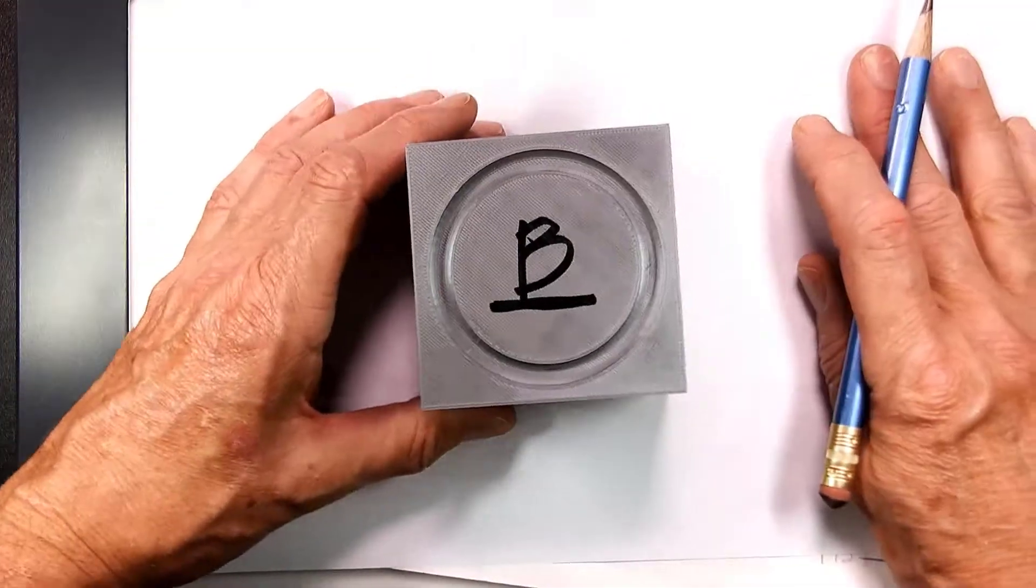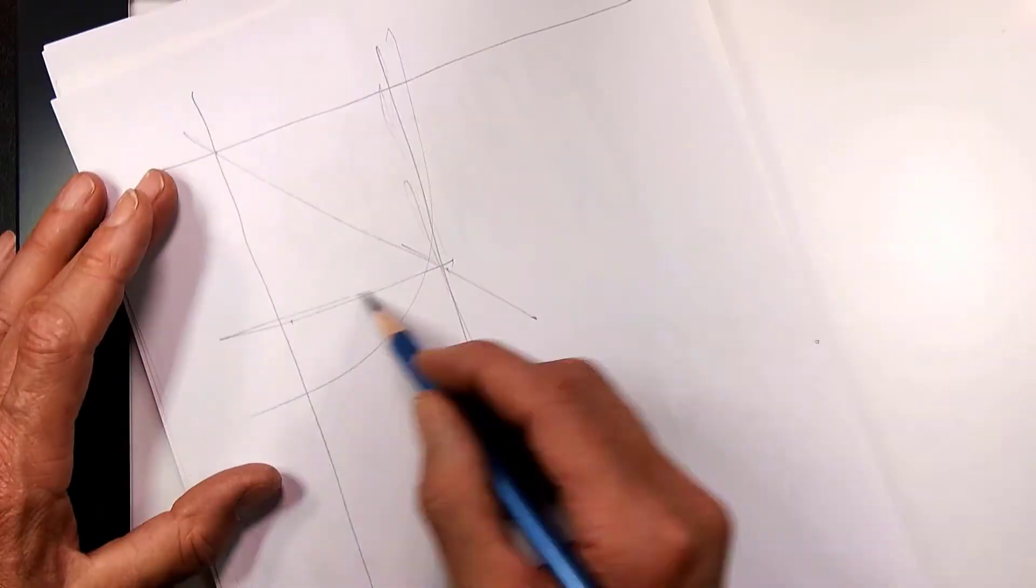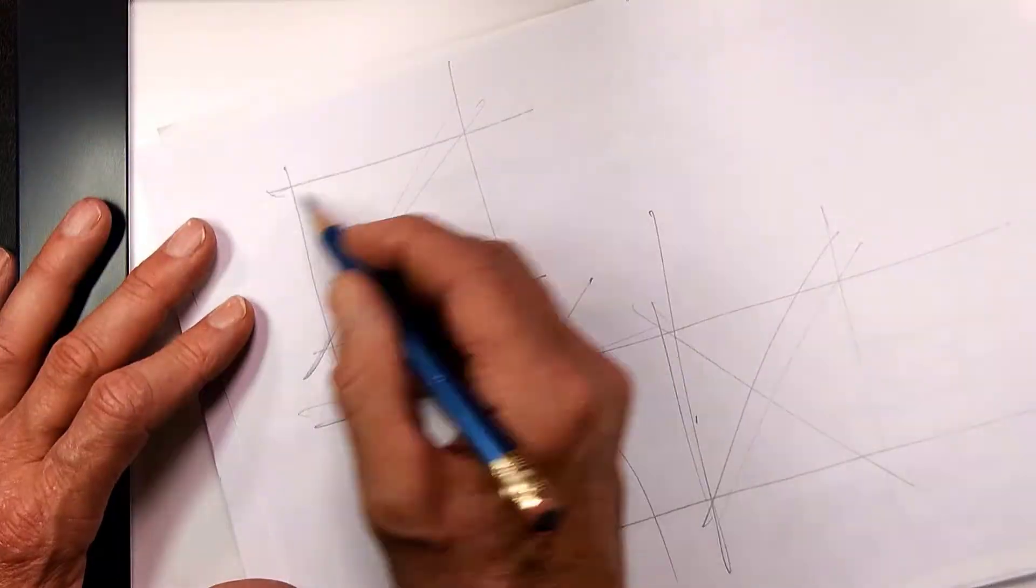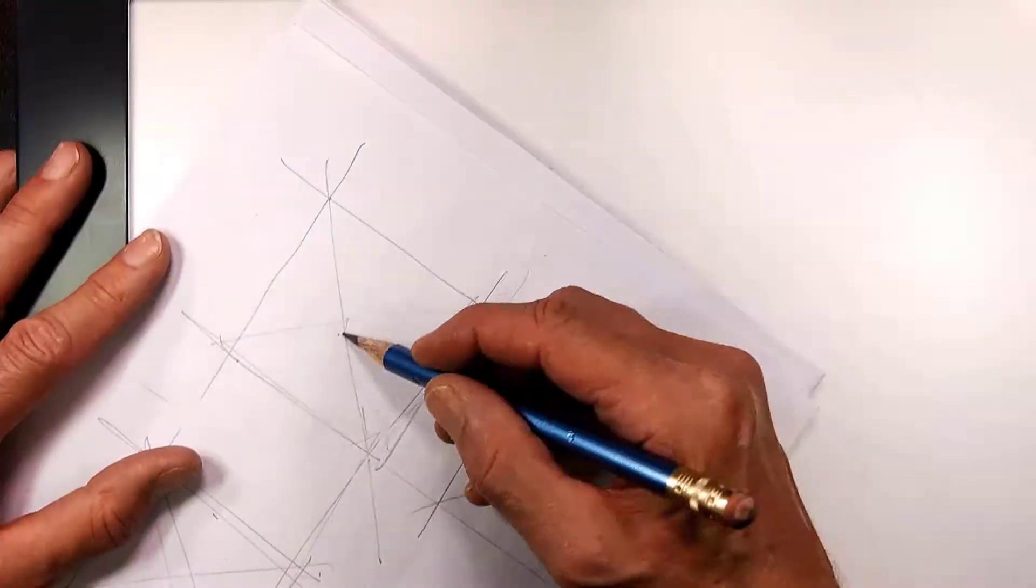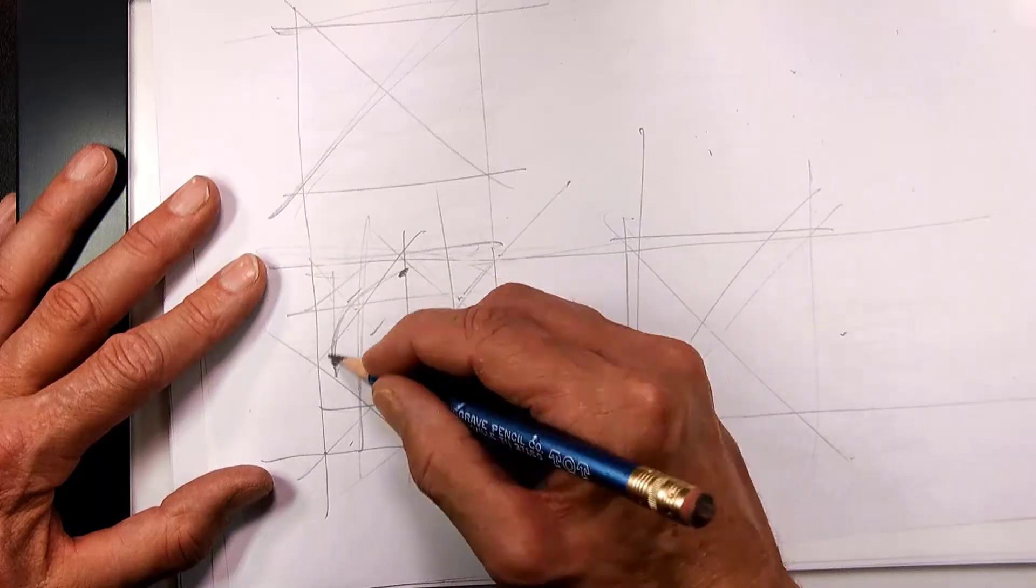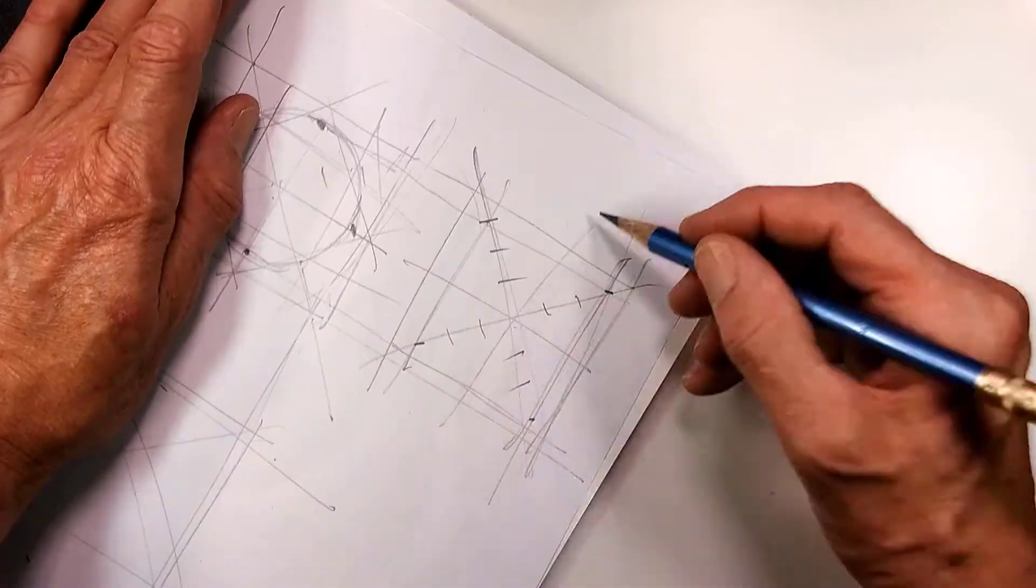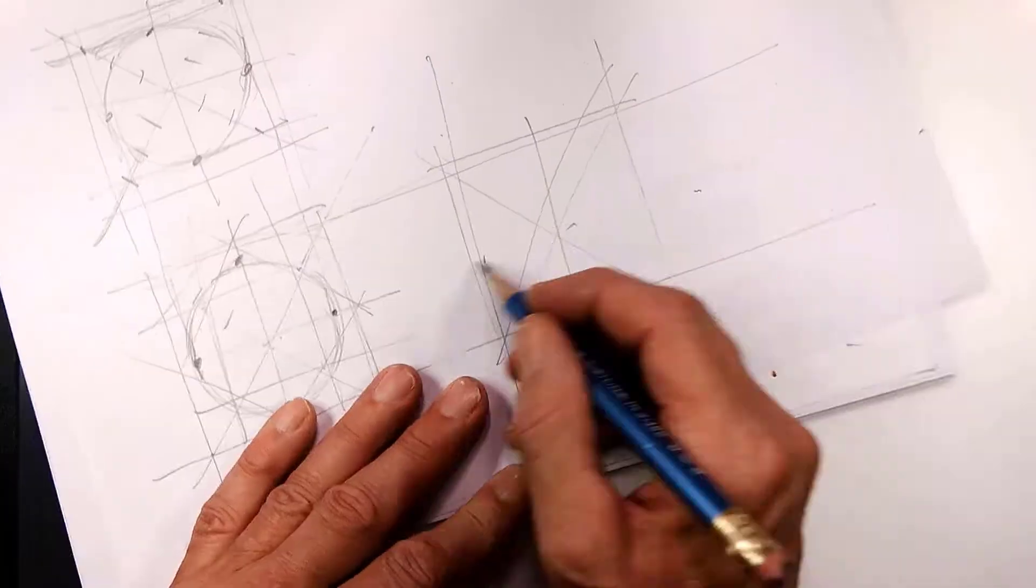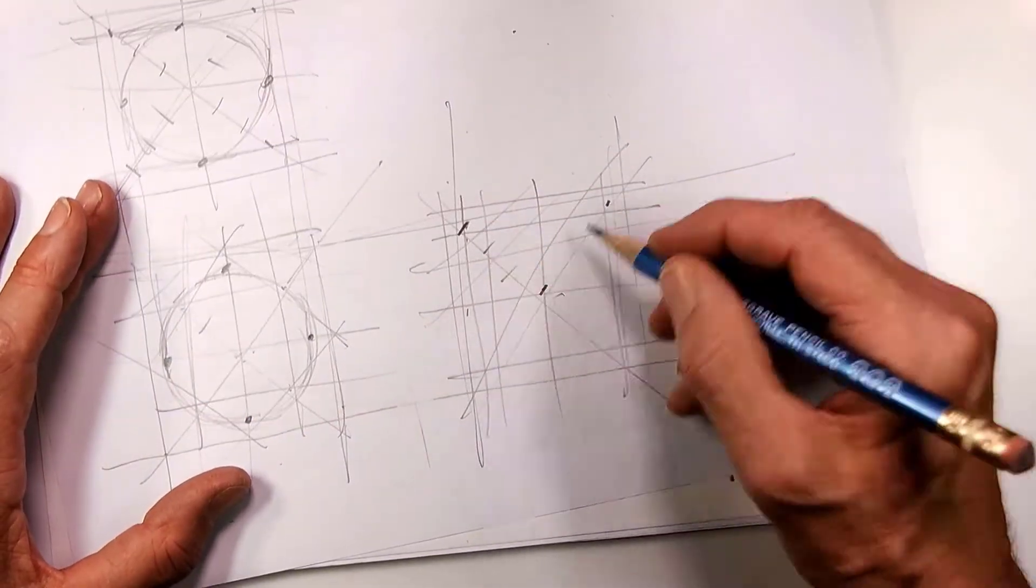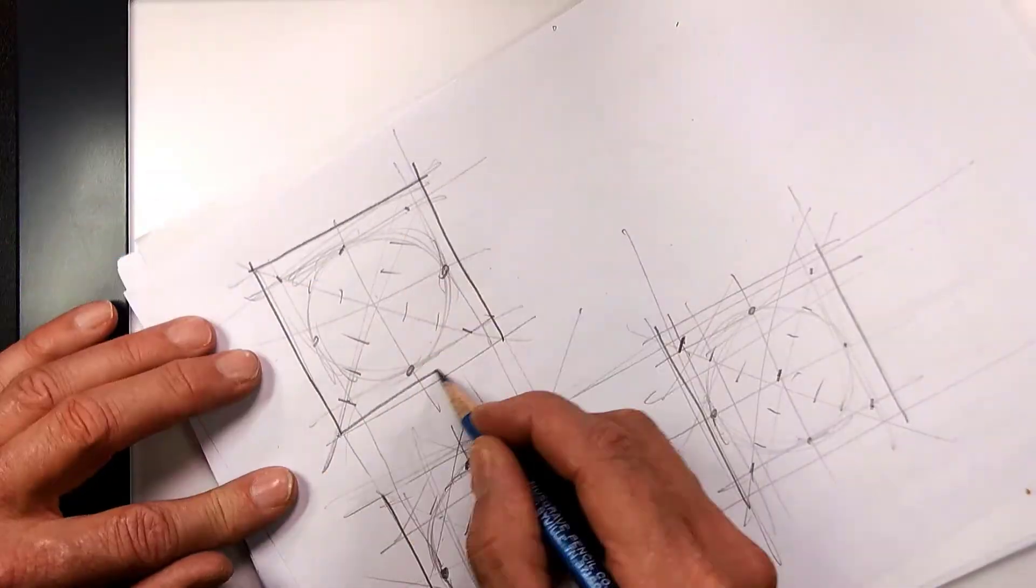This is another example of a circle. Let's do a set of orthographic drawings of our cube. And let's draw now circles on the front, the top, and the side.